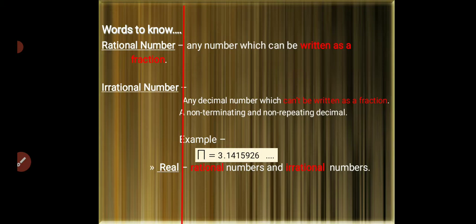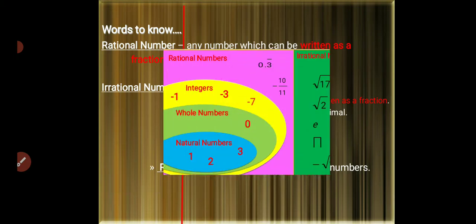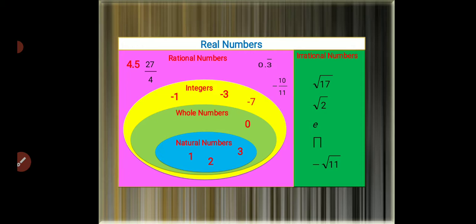Real numbers include irrational numbers and rational numbers. Examples: 4.5, 2/7, 0.3, negative 10/11. Integers: negative 1, negative 3, negative 7. Whole numbers start at 0. Natural numbers: 1, 2, 3. Irrational numbers: square root of 17, square root of 2, e, and negative square root of 11.